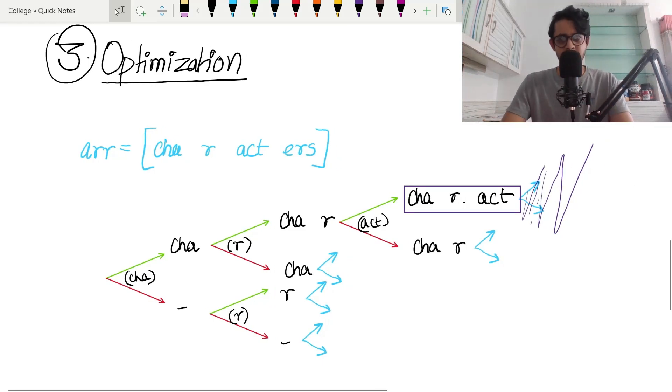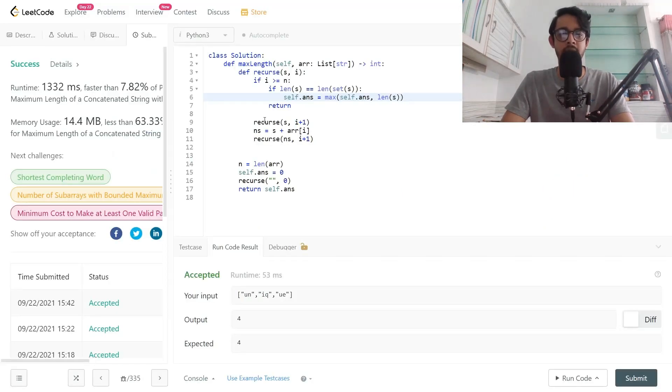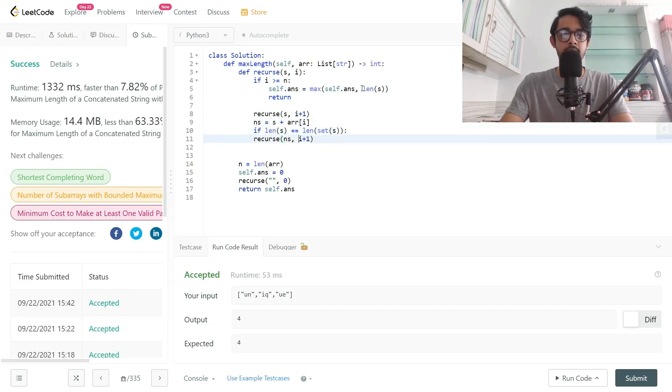That's pretty much it for the optimization - pruning of a tree. Before we spawn this new recursion with the new string, let's check if this particular new string follows this condition. I'm taking this from here and pasting it over here, and instead of this string we'll check the new string. Let's do a check.